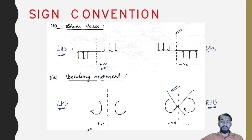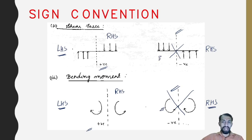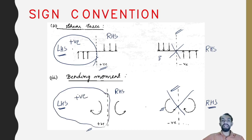To avoid confusion, remember: for the right-hand side section, downward is positive and upward is negative for shear force; anticlockwise is positive and clockwise is negative for bending moment. Focus on: left-hand side upward is positive, left-hand side clockwise rotation is positive for BMD and SFD.